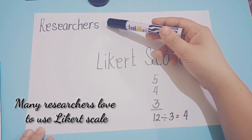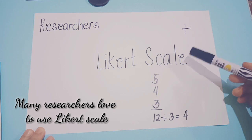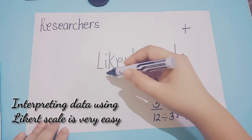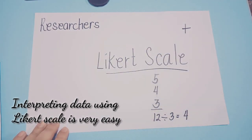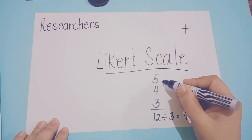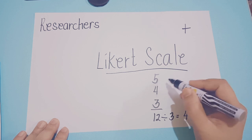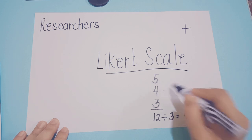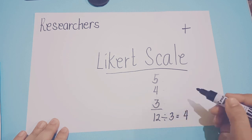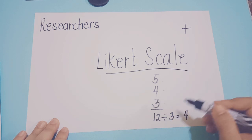Many researchers love to use data from the Likert scale with descriptive statistics. Although it may be tempting to say that interpreting data using Likert scale is very easy, you just have to add the answers of your respondents. For example, 5 (strongly agree) plus 4 (agree) plus 3 (moderately agree) equals 12.